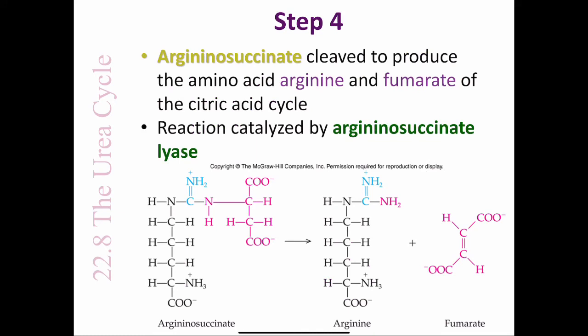The arginosuccinate is cleaved to produce the amino acid arginine and the citric acid cycle intermediate fumarate. This reaction is catalyzed by the enzyme arginosuccinate lyase. Lyases are involved sometimes in the formation of double bonds.